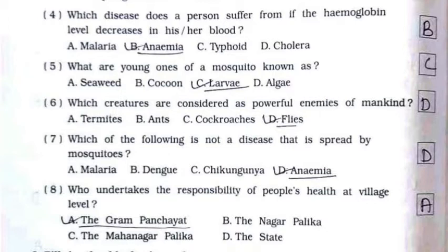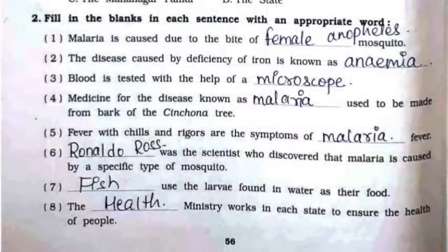Fourth: which disease does a person suffer from if the hemoglobin level decreases in their blood? It's option B: anemia. Fifth: what are the young ones of a mosquito known as? It's option C: larvae. Sixth: which creatures are considered powerful enemies of mankind? It's option D: flies. Seventh: which of the following is not a disease spread by mosquitoes? It's option D: anemia. Eighth: who undertakes the responsibility of people's health at village level? It's option A: the Gram Panchayat.